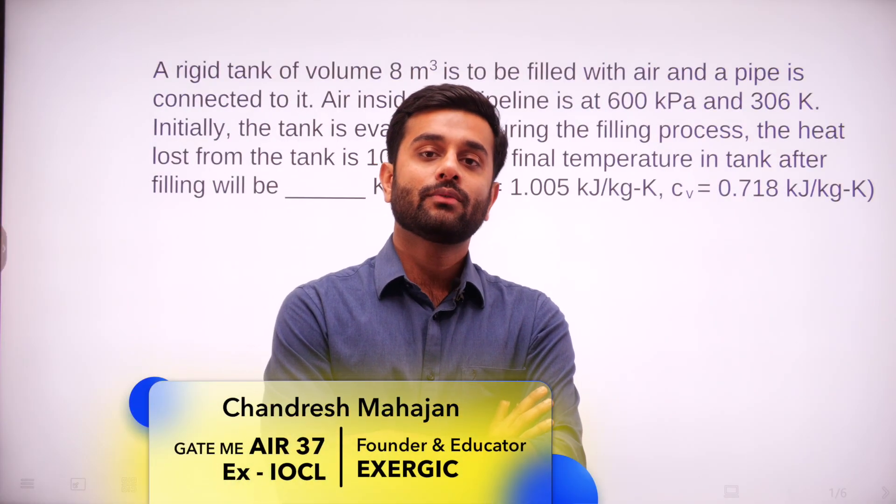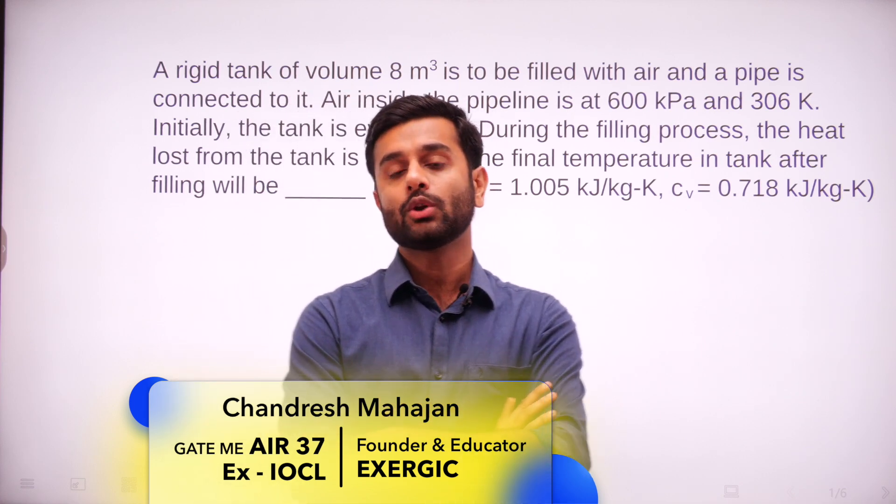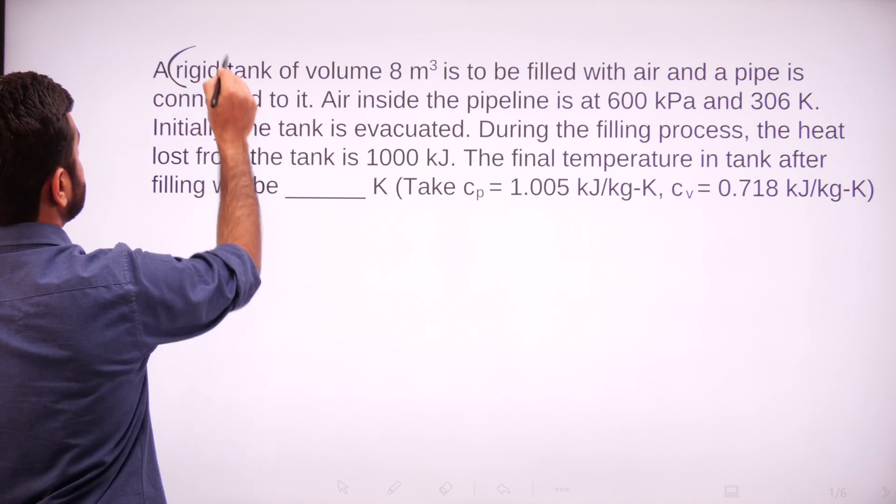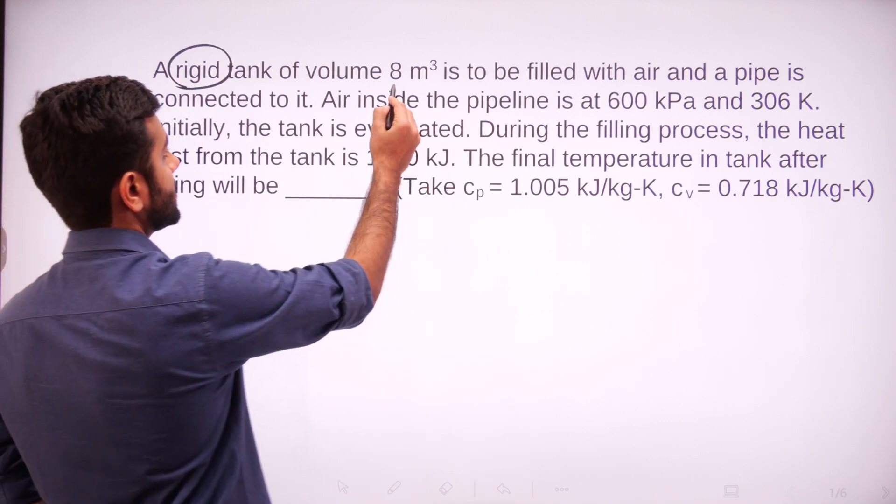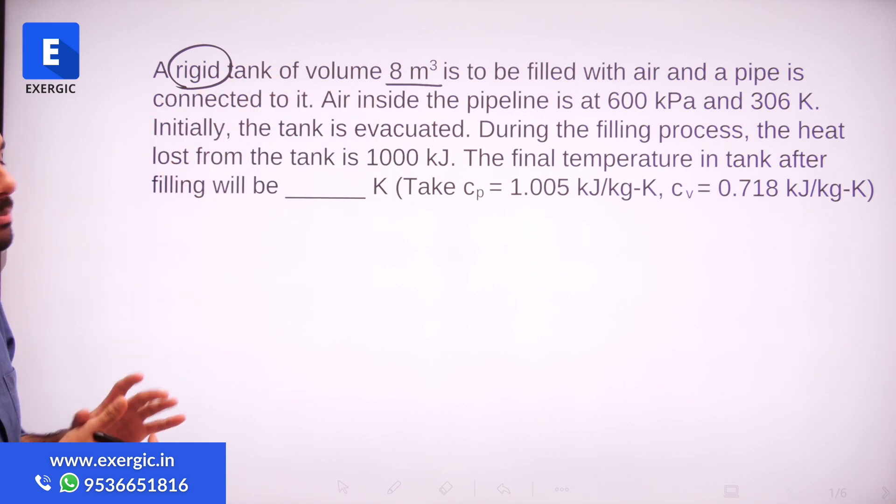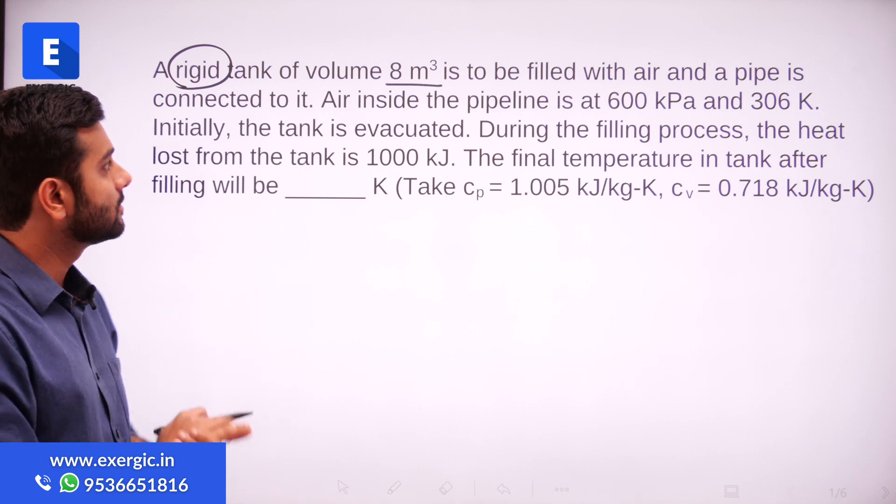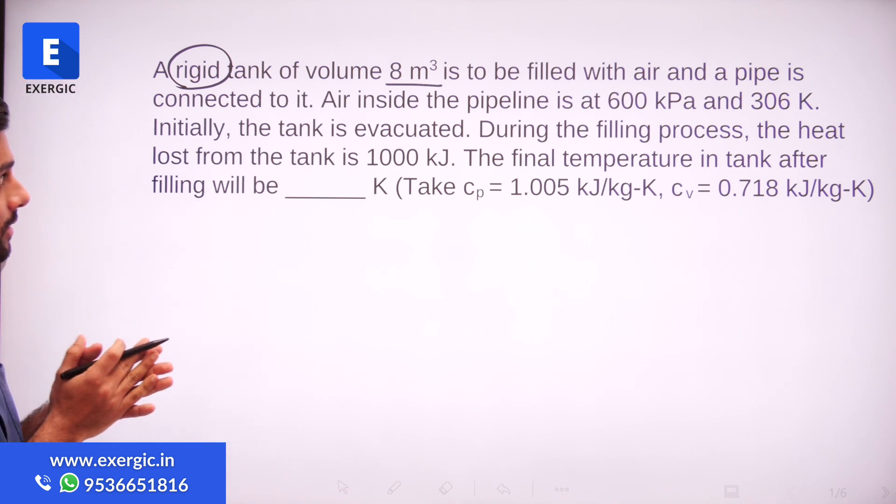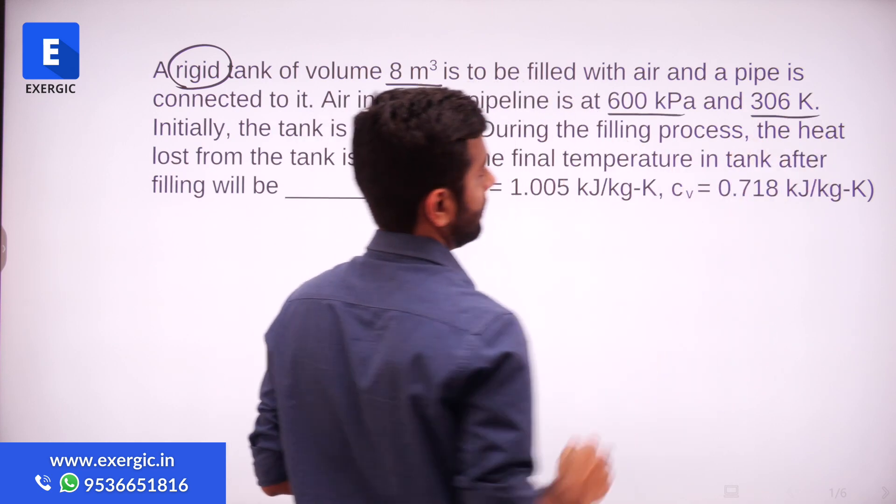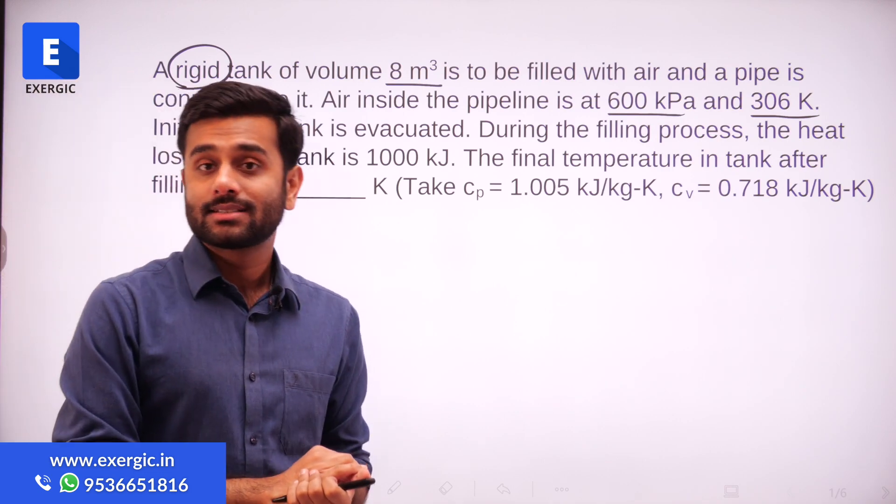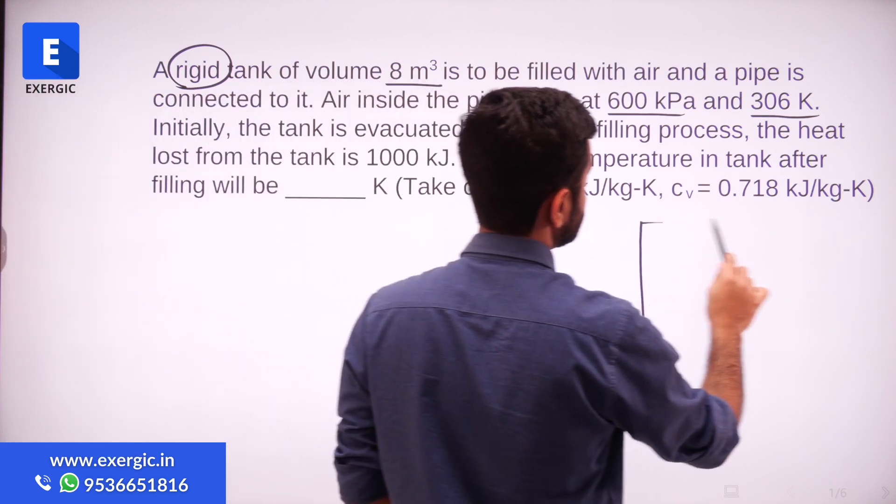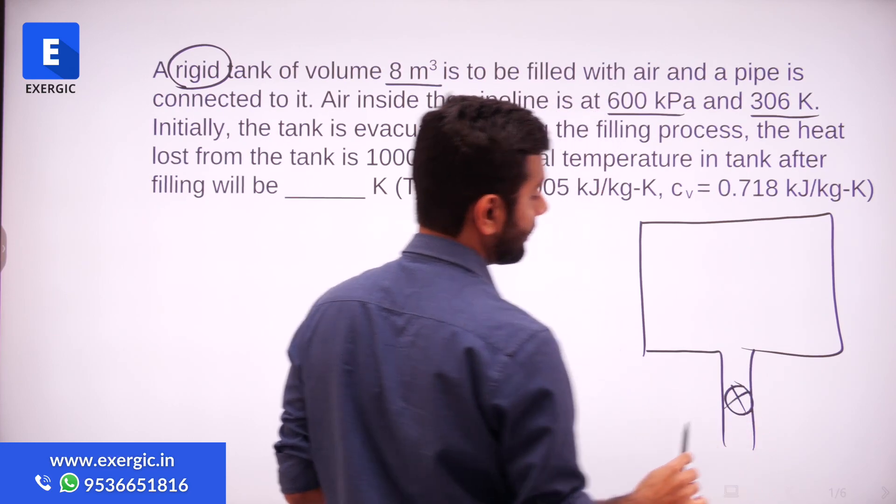Now, have a look at this question from Engineering Thermodynamics which was asked in GATE 2022 afternoon session. A rigid tank of volume 8 m³ is to be filled with air. Volume is given which obviously is not going to change because the tank is rigid and it is to be filled with air through a pipeline. Air inside the pipeline is at 600 kPa and 306 K. Initially, the tank is evacuated. So the tank initially is evacuated, it does not have air, it is vacuumed. So there is no mass initially inside, obviously no pressure inside.